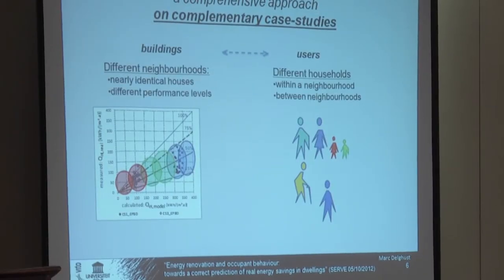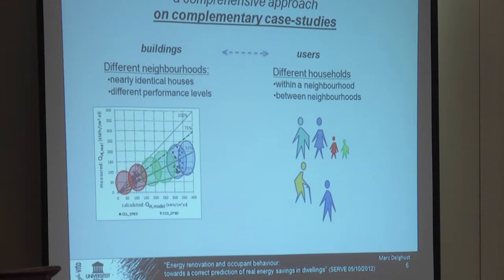We do that on complementary case studies — not just one neighbourhood. First, we use different neighbourhoods of nearly identical houses. Nearly identical makes it easier to isolate variation due to user behaviour. We do that on different neighbourhoods — old and new — to assess whether conclusions from one neighbourhood, for example non-insulated houses, are also valid for insulated houses. Within one neighbourhood we have different users, but we also find that there is a link between the building and the user. For example, in old houses we mostly find older or poorer people, so it's not easy to find sets that cover all possible combinations.